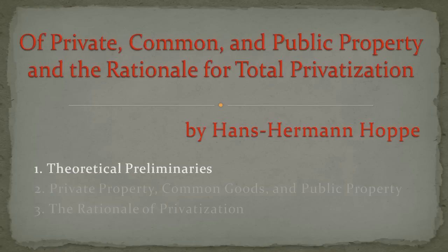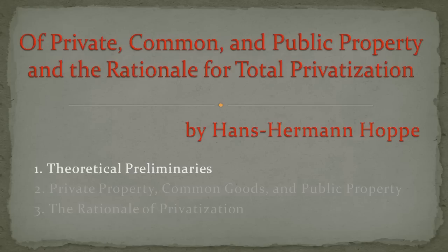Even under conditions of scarcity, when conflicts are possible, they are not necessary or unavoidable. All conflicts regarding the use of any good can be avoided if only every good is privately owned, i.e. exclusively controlled by some specified individual or individuals, and it is always clear which thing is owned and by whom. The interests and ideas of different individuals may then be as different as can be and yet no conflict arises, so long as their interests and ideas are concerned always and exclusively with their own separate property. What is needed to avoid all conflict, then, is only a norm regarding the privatization of scarce goods. More specifically, in order to avoid all conflict from the very beginning of mankind, the required norm must concern the original privatization of goods — the first transformation of nature-given things into economic goods and private property.